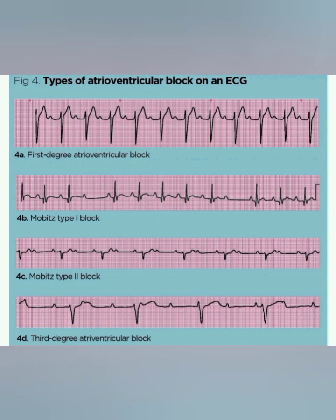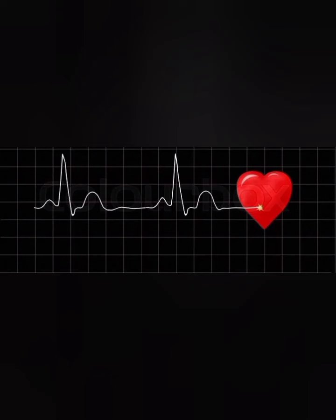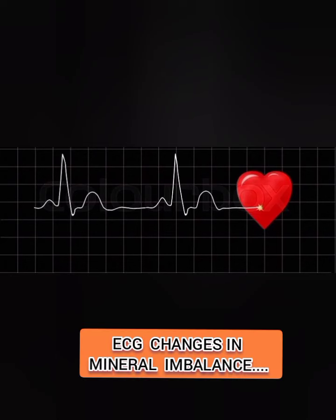The next abnormality in the ECG is the types of atrioventricular block. Here we have the first degree atrioventricular block, then Mobitz type 1 block, Mobitz type 2 block, and third degree atrioventricular block. Now we'll discuss the different ECG changes in cases of mineral imbalance.